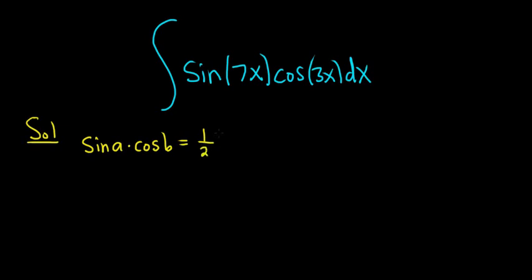And this is one of the product-to-sum identities. So parenthesis sine of a plus b, so a plus b, plus sine of a minus b, so a minus b.